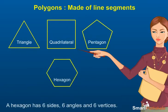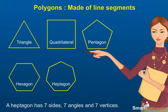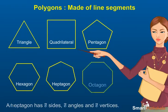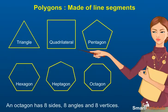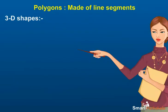A hexagon has six sides, six angles, and six vertices. A heptagon has seven sides, seven angles, and seven vertices. An octagon has eight sides, eight angles, and eight vertices.